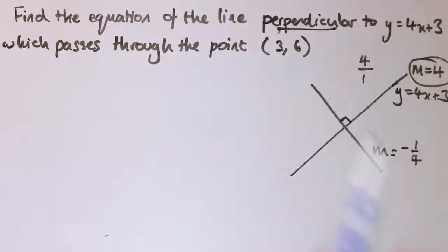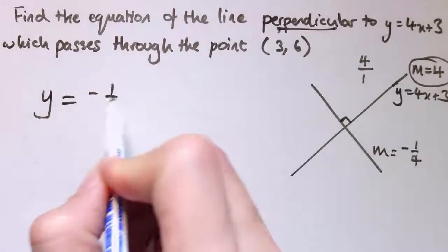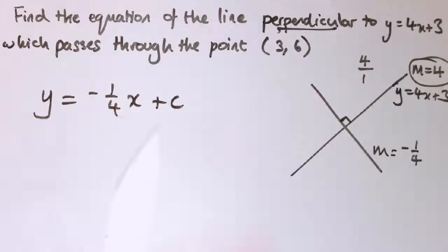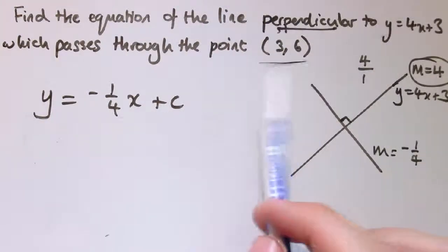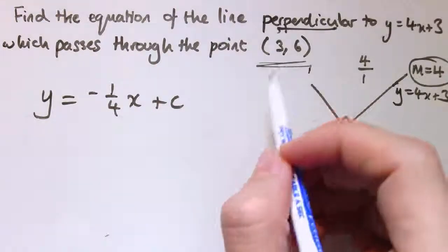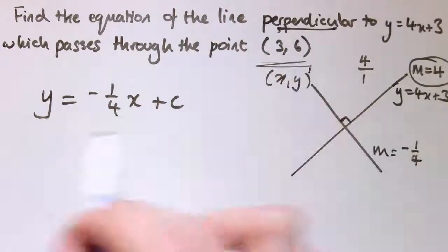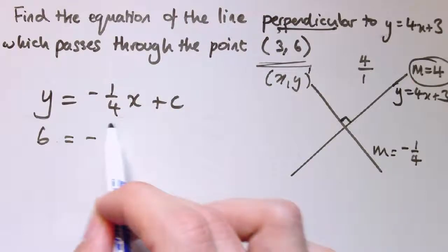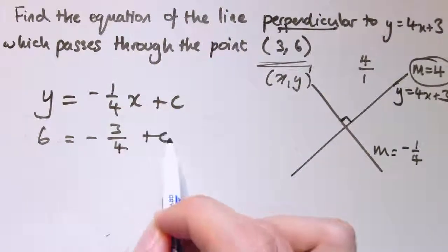So this is a line then with gradient minus 1/4, so it's minus 1/4 x plus a constant. And we know it goes through the point (3,6). So when x equals 3, y equals 6.